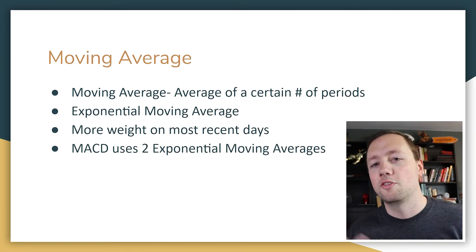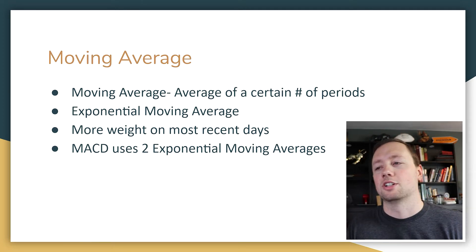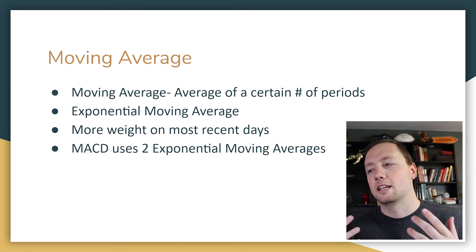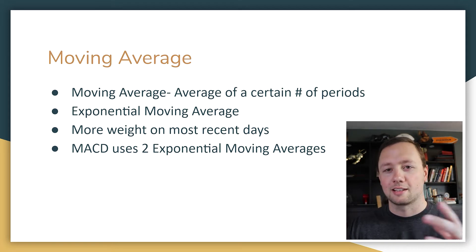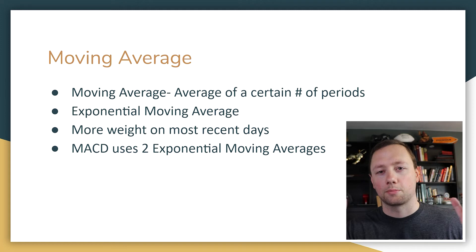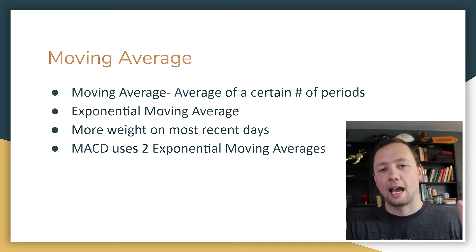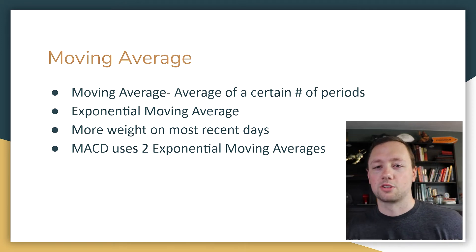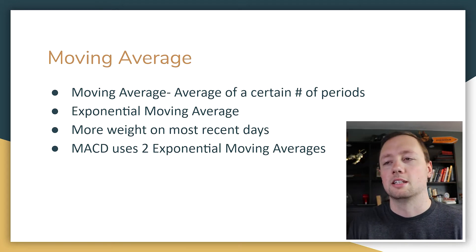Moving Average is the first part — MA. It is basically an average of a certain number of periods. If you take a simple average, let's say there are five closing prices over the last five days, you would add those up, divide them by five, and that would be your simple moving average. Pretty easy concept.